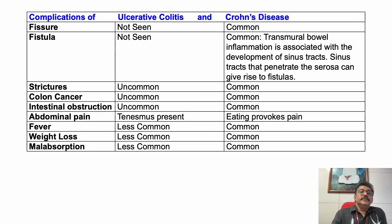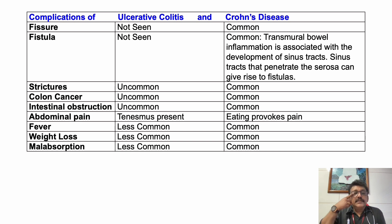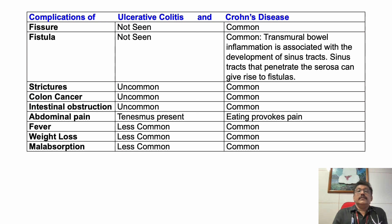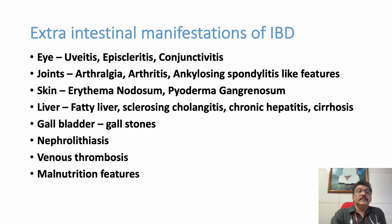Now, complications: fissures and fistulas are common in Crohn's disease. Strictures, colon cancer, fever, weight loss, and malabsorption are all more common in Crohn's disease. So most complications are more associated with Crohn's disease.